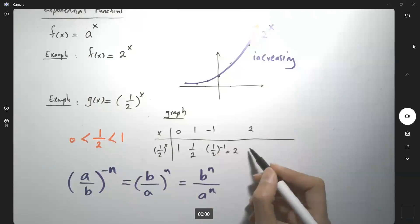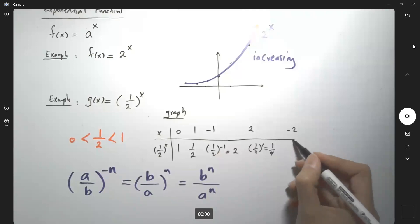Suppose you plug in 2. You have (1/2)^2 or one-fourth. If I plug in negative 2, you have (1/2)^(-2), which means you have 2^2 or 4.